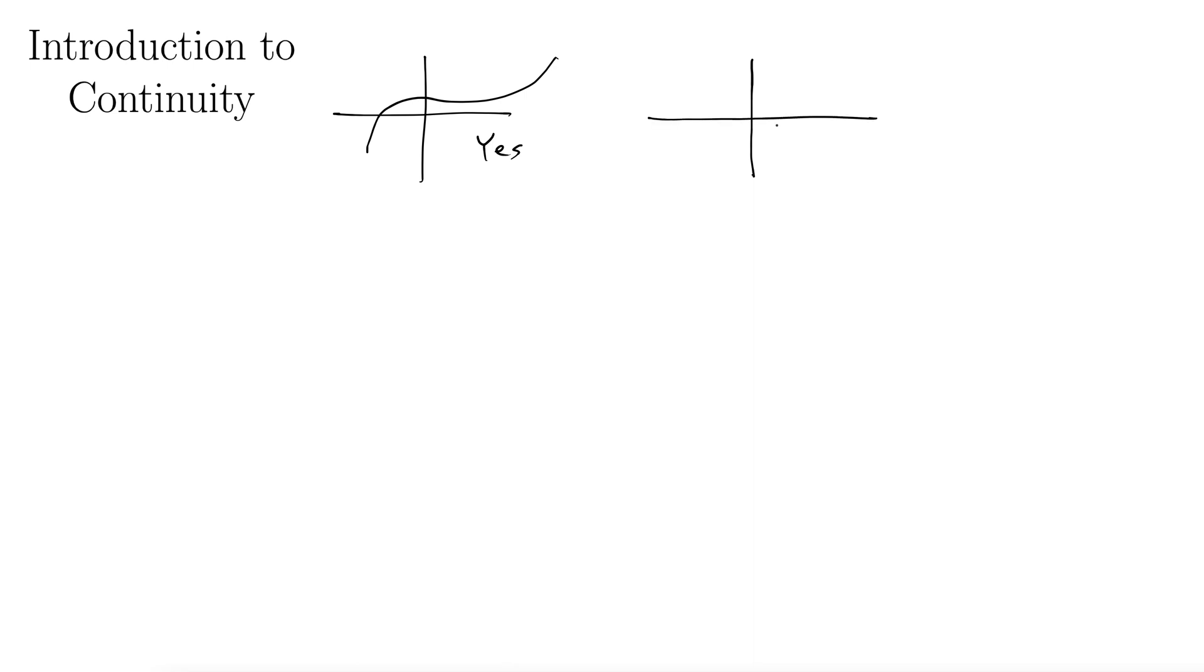Let's contrast that with some things that are not continuous. Something that's missing a single point, right? That's a nice function everywhere except for this one point, a we'll call it. And that's a problem right there at a. It's missing a point. So this is not continuous.